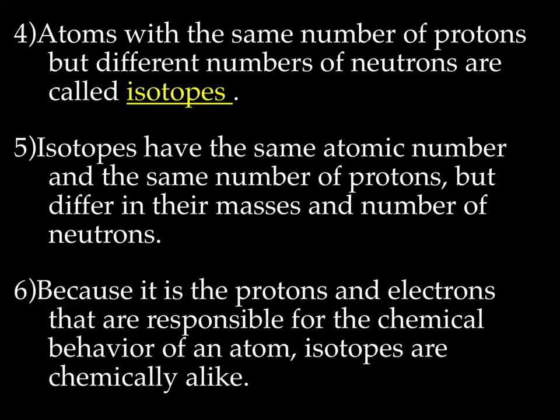Okay. So atoms with the same number of protons, but different numbers of neutrons are called isotopes. So isotopes have the same atomic number and the same number of protons, but differ in their masses because they have a different number of neutrons. So we can have a carbon, carbon has 6 protons. Every carbon in the world has 6 protons, but some carbons might have 6 neutrons, some might have 5, some might have 7. So because it's the protons and the electrons that are responsible for the chemical behavior of an atom, isotopes are chemically alike. So even though one carbon has 7 neutrons and one has 5 neutrons, they still act the same.